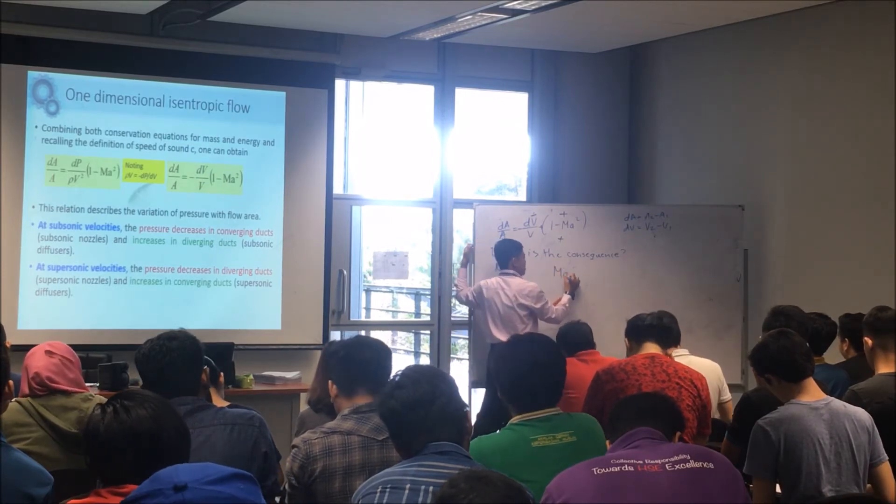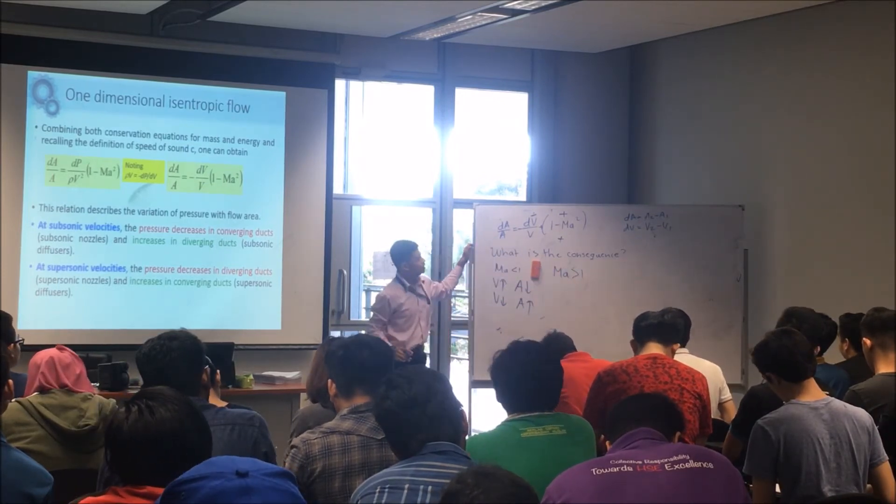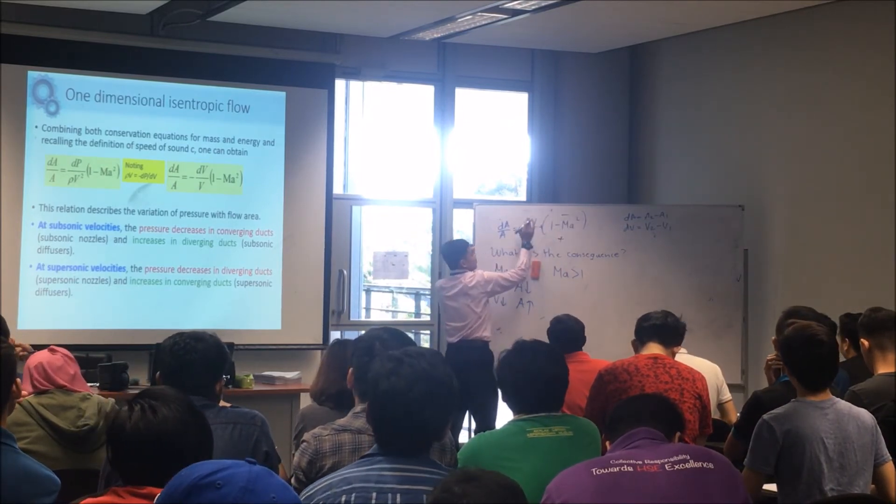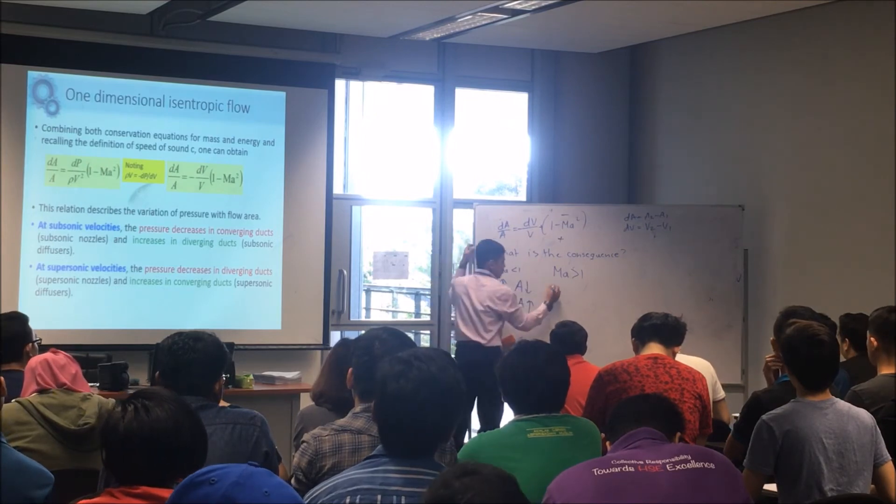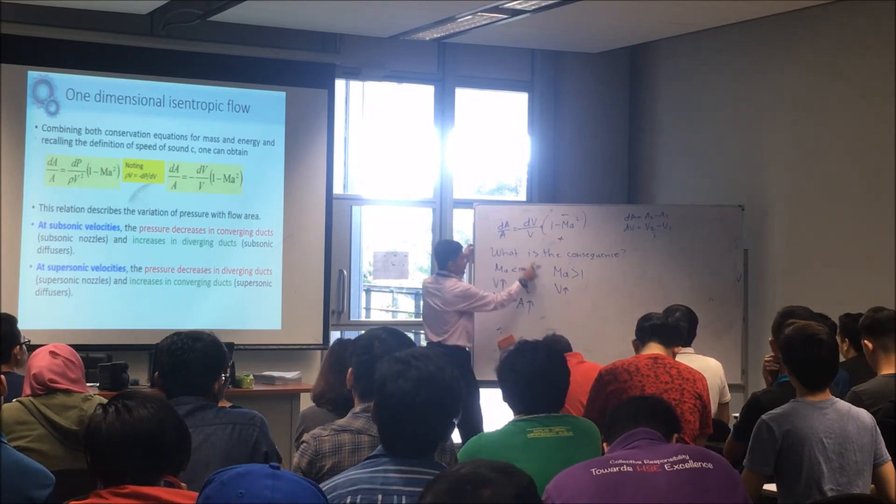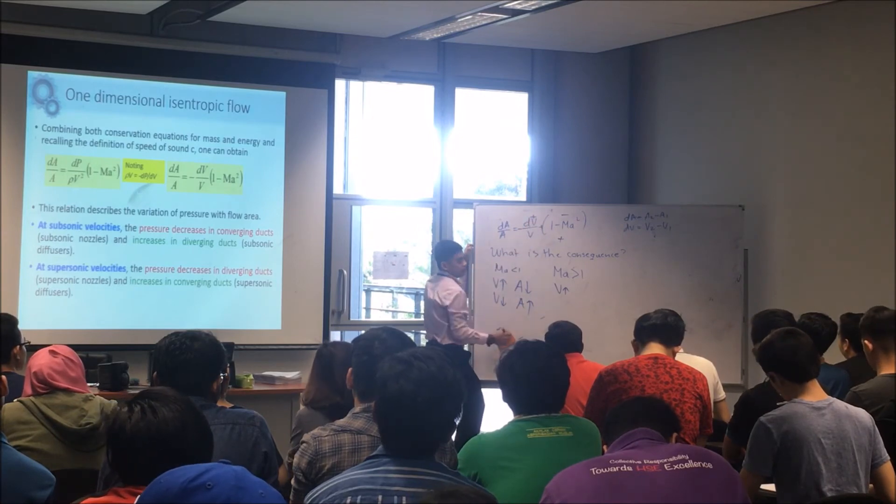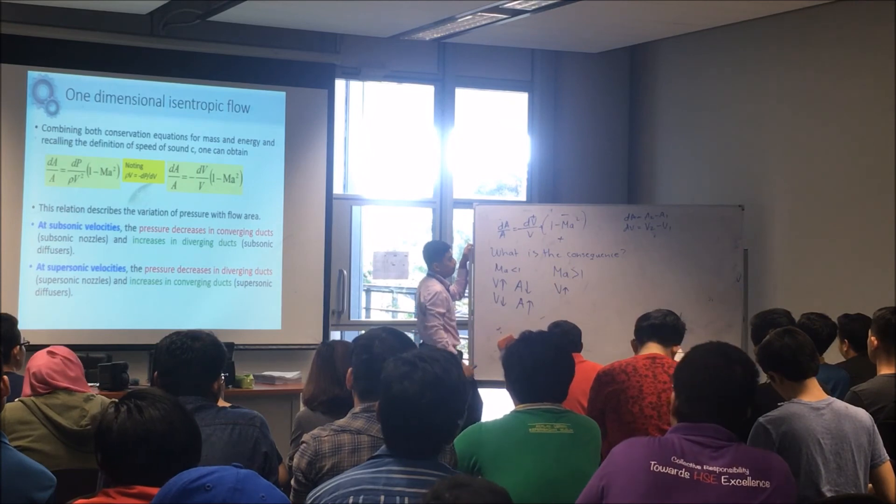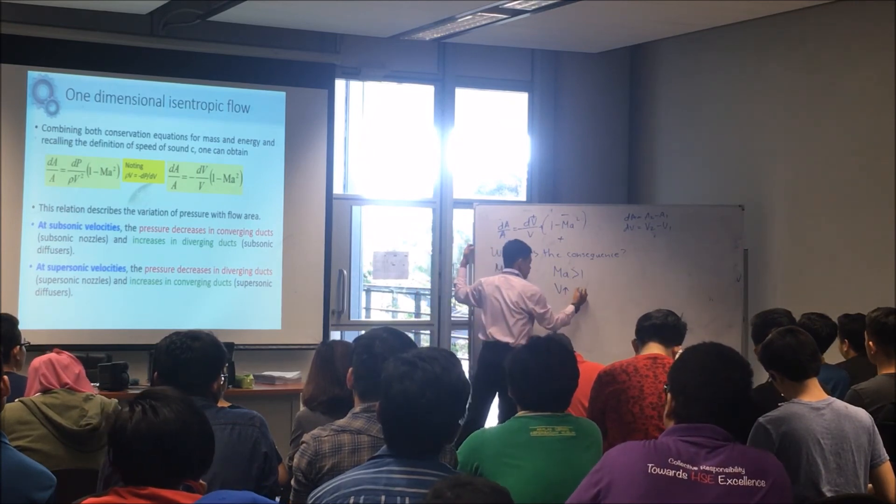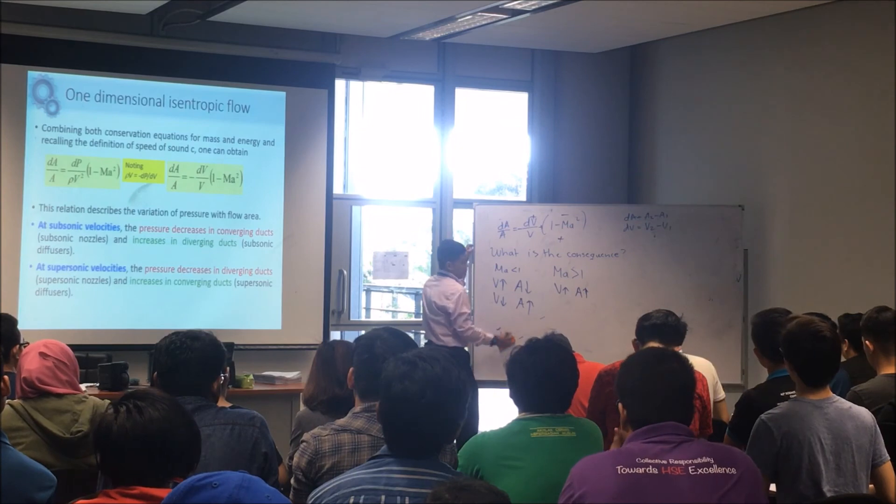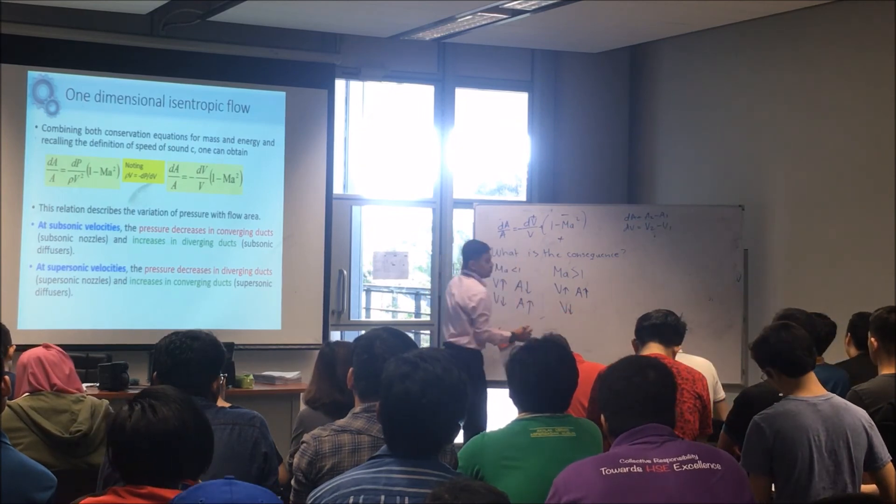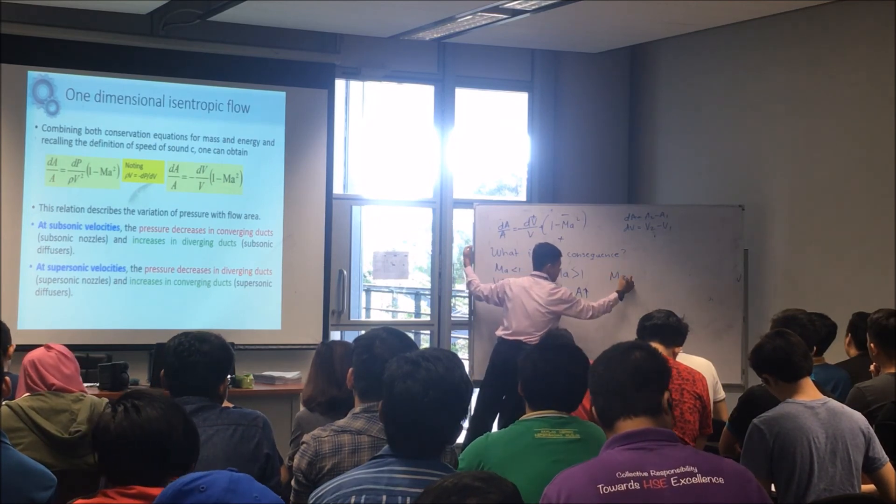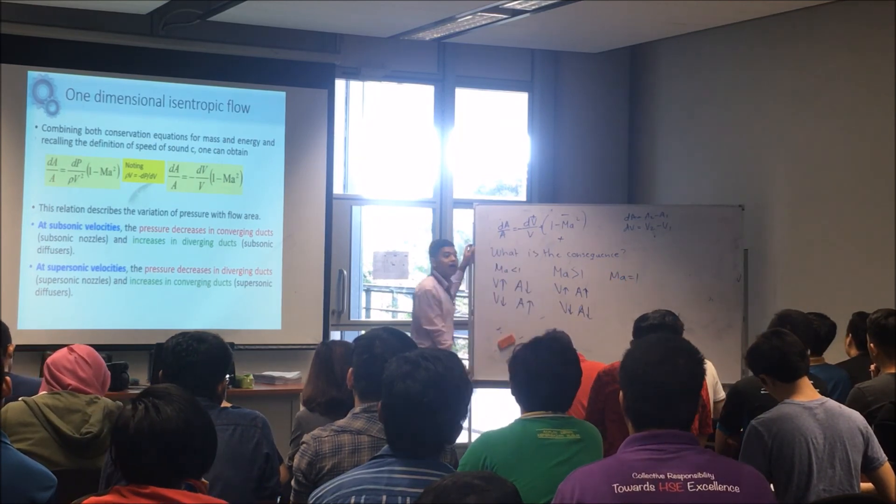Now when Mach number is more than 1, what will happen? This one becomes negative. So now if you want to increase the velocity, dV is positive, increasing, so the area has to be positive. When velocity decreases, area needs to decrease. Now the question is what happens when Mach equals zero?